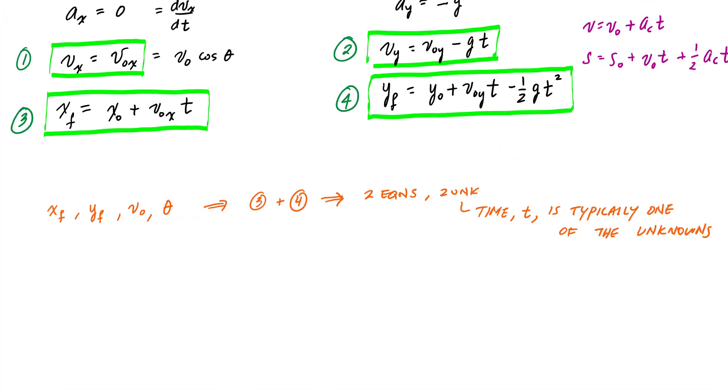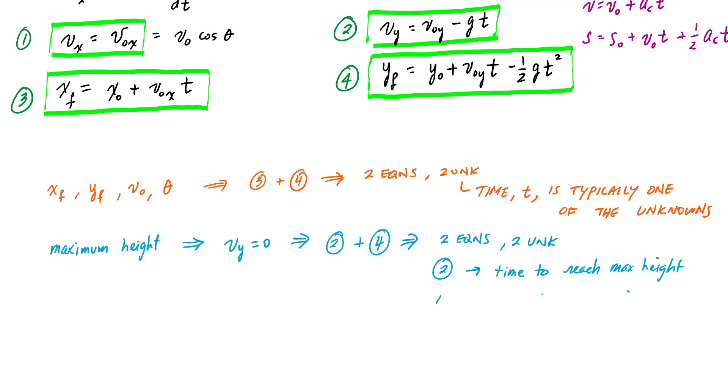In some cases, you're asked to find the maximum height that the projectile has reached. That's associated with the case where VY equals zero, which means we're looking only in the vertical or Y direction, specifically for when the particle changes direction in the Y component. That involves only the Y direction. You'll typically use equations two and four. You'll use equation two to solve for time to reach max height, then take that time and plug it into equation four, the Y position equation, to determine the maximum height.